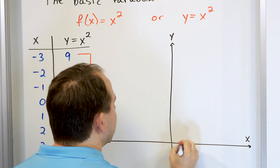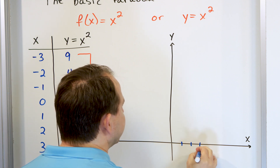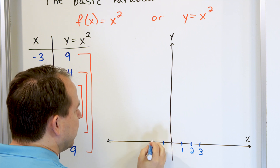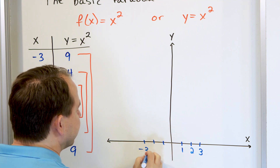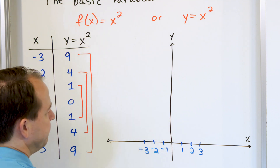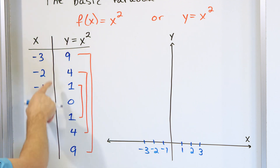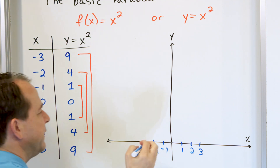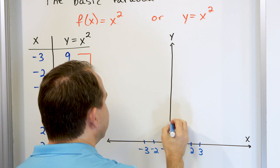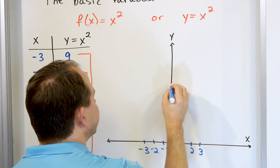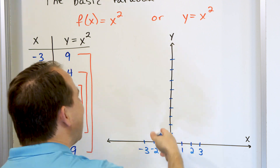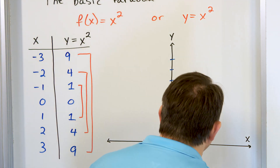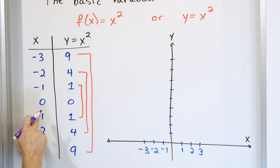Let me put tick marks: one, two, three on the positive x side, so this is three, two, one, zero, negative one, negative two, negative three. And on the y-axis I'll put nine tick marks going up — one through nine — since the largest value I have is nine. I don't have any points beyond that.